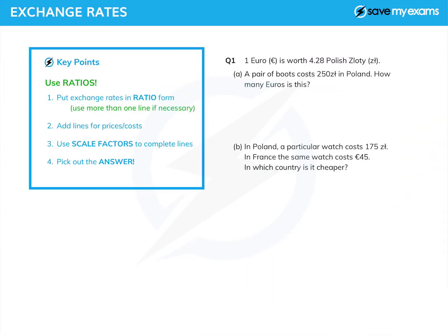Here we're going to look at exchange rates and how to deal with them. There are a number of ways of doing this, but my favourite way is to use ratios all the time. So we're going to write the exchange rate in ratio form. If we've got more than one exchange rate, use more than one line, and then we're going to add lines as we need them and use scale factors to complete the lines or the bits of lines we need.